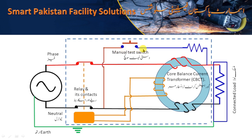This is the manual test switch. By pressing this switch, the functionality of this ELCB can be tested. Apart from it, this is the phase wire, this is the neutral wire, this is the earth or ground conductor, the load connected to the ELCB, and the power source to the load.